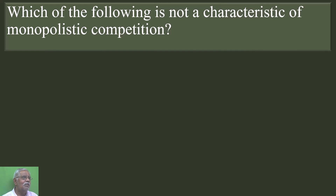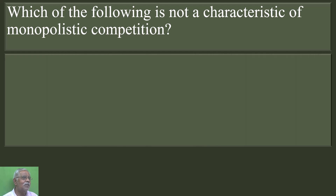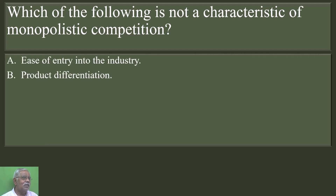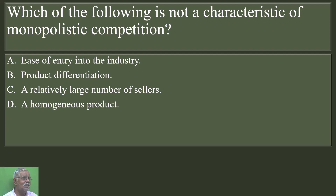Which of the following is not a characteristic of monopolistic competition? Options: ease of entry into the industry; product differentiation; a relatively large number of sellers; a homogenous product. D is the correct answer. In monopolistic competition there is product differentiation — products are not homogenous in nature.